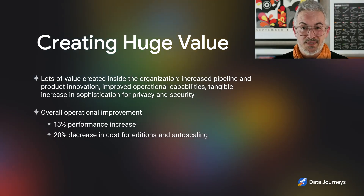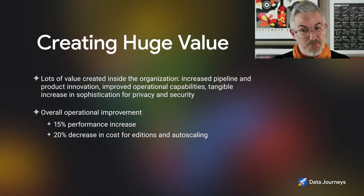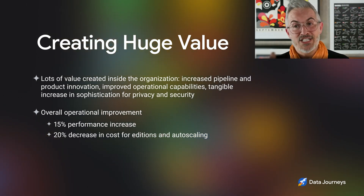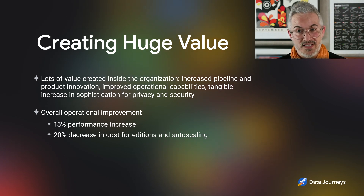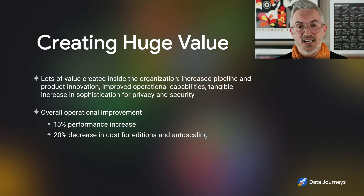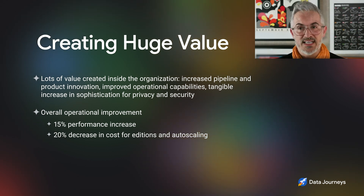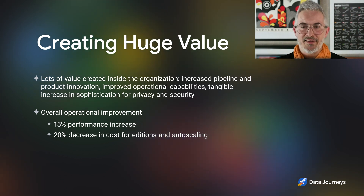You've got a lot of huge value being created inside of our organization: an increased pipeline and product innovation, operational capabilities showing at our bottom line, and a very tangible increase in sophistication for privacy and security shown to customers. The punchline for us though is that we've seen an operational improvement of around 15% in performance in our instances and with our customers — that's a pretty big number at the scale we're operating. In addition, we see a 20% decrease in cost that we attribute to additions and auto-scaling in particular. We're in a happy spot, and we really like getting to be in this ecosystem with a collaborative approach with the team.